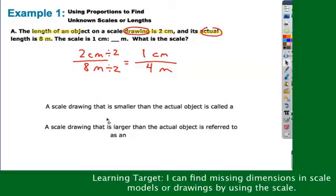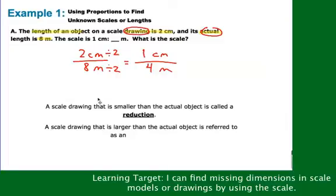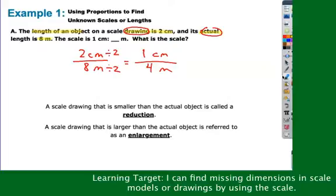Just a couple other terms to be familiar with here. A scale drawing that is smaller than the actual object. So think like maps, blueprints, whatever. This is called a reduction. Maps and blueprints are examples of reductions. A scale drawing that is larger than the original object is an enlargement. It makes it bigger. That would be like a statue or something like that. Or like looking under a microscope. That makes your actual object look bigger.